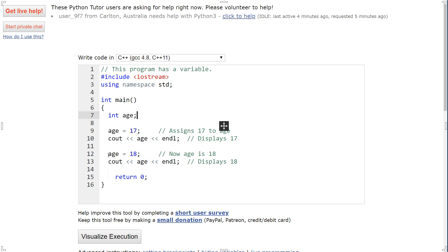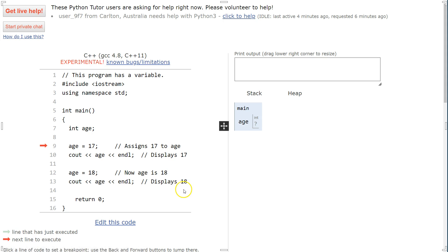We have a new assignment statement. Age now equals 18. We're going to print that out, and then that's the end of the program. I click go. Our little visualize button down here. We're going to go ahead and roll in. Here we go.